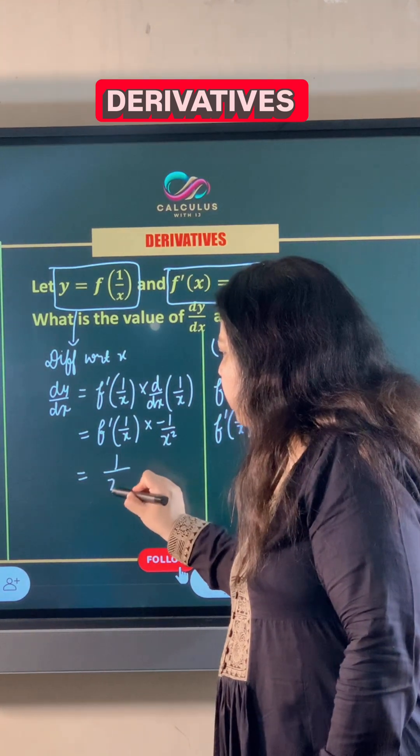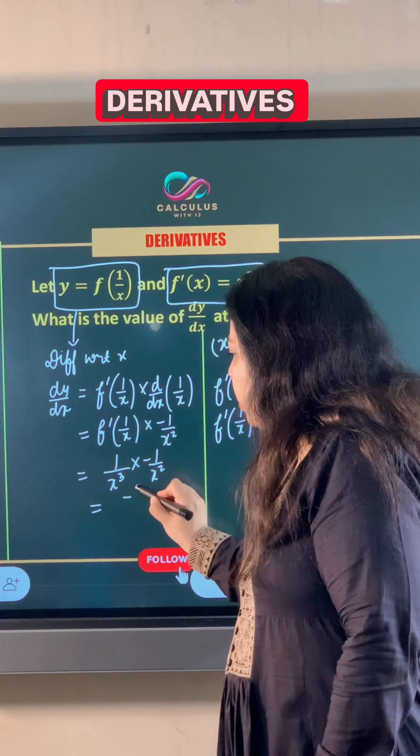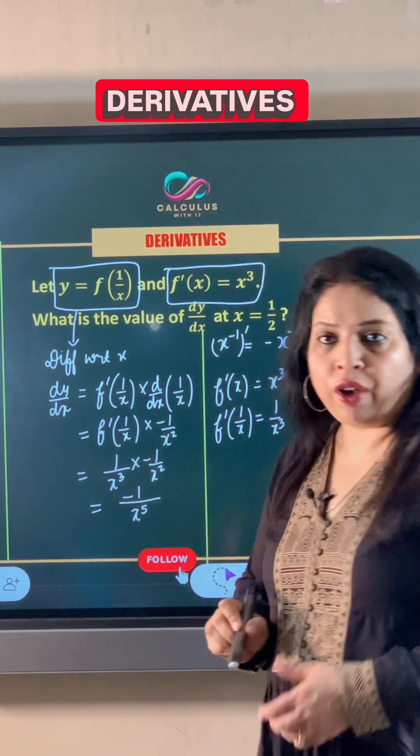So this becomes 1 upon x cube multiplied by minus 1 upon x square, which is negative 1 upon x to the power 5.